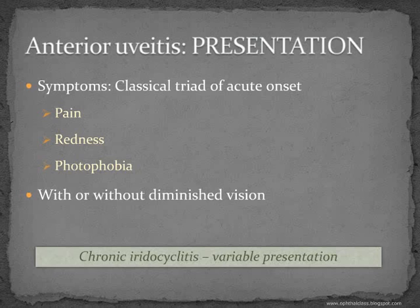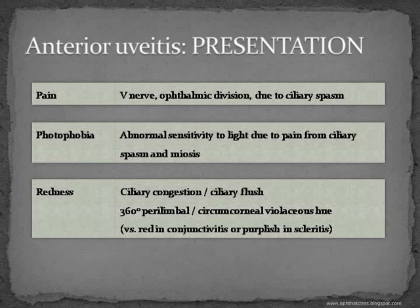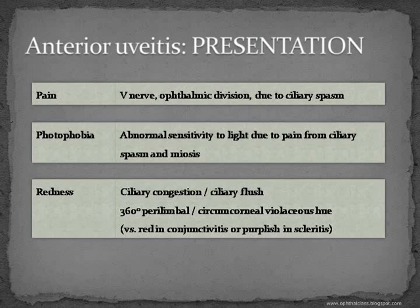Chronic iridocyclitis will have a variable presentation. Pain is due to ciliary spasm. The anterior segment of the eye, including the cornea, iris and ciliary body, are extremely well supplied with nerves — this is the first division of the fifth nerve. So any problem in this area usually gives rise to pain. The pain of anterior uveitis is distributed along the entire first division. Photophobia is abnormal sensitivity to light due to pain from ciliary spasm as well as miosis. The pupil is constricted, sluggish reaction to light is present, and there is ciliary spasm. All of this contributes to abnormal sensitivity to ambient light — distinguished from glare, which is sensitivity to bright lights.